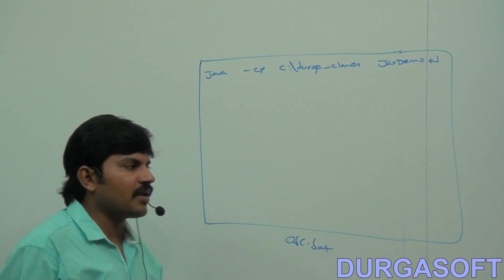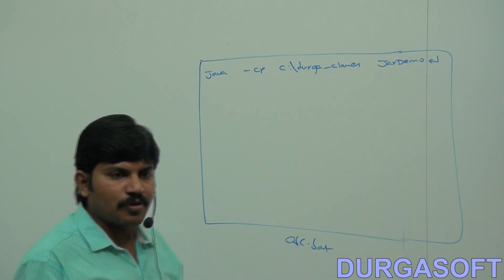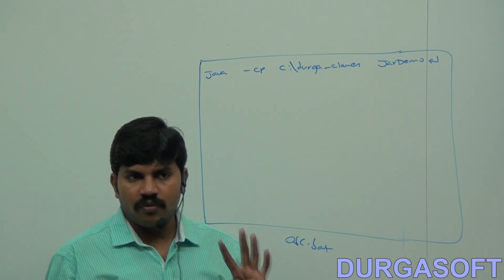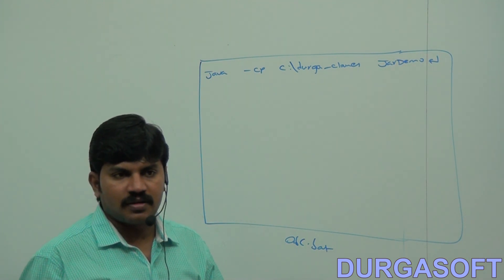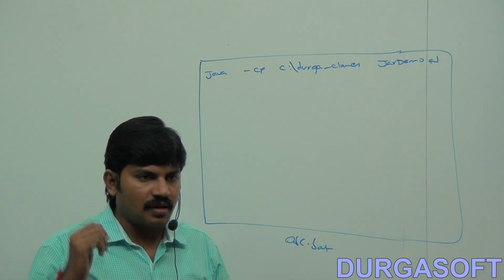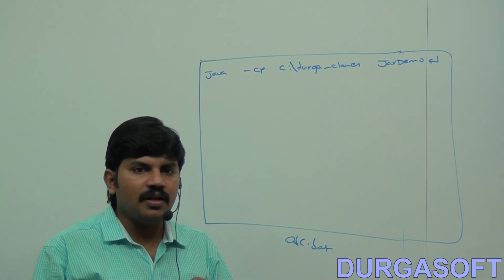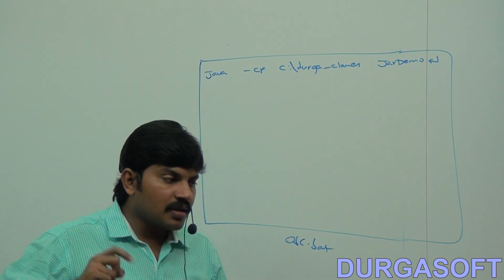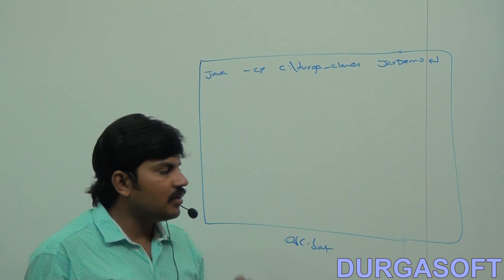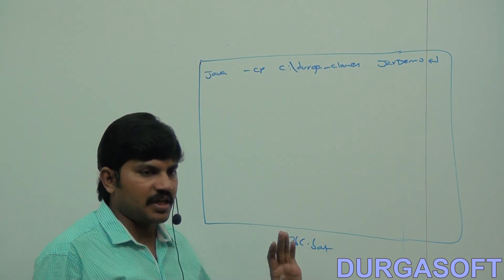So in how many ways can we run a Java program? Four ways. First: run the .class file. Second: run the .jar file. Third: double-click the jar file. Fourth: double-click the batch file.